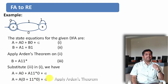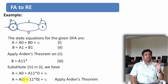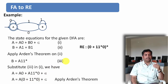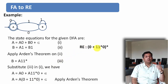Now we can apply Arden's theorem again. Here Q is epsilon and P is (0 plus 1·1 star·0). Applying Arden's theorem, we get the required regular expression as epsilon·(0 plus 1·1 star·0) star, which gives us (0 plus 1·1 star·0) star.